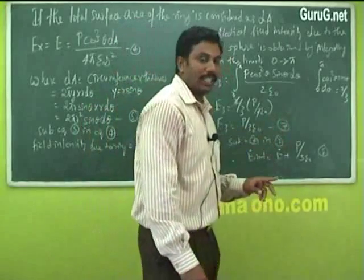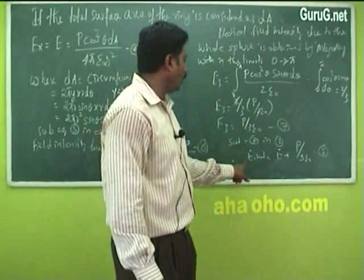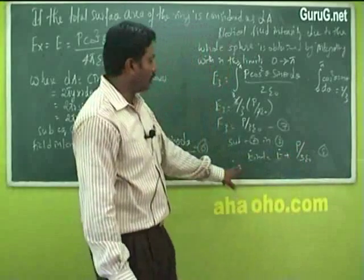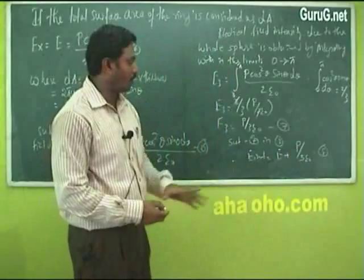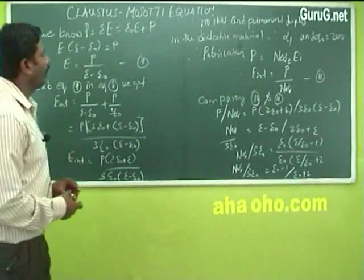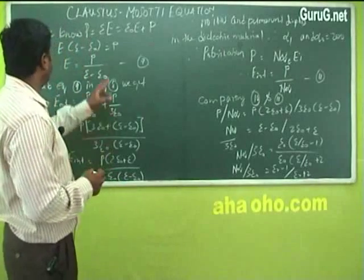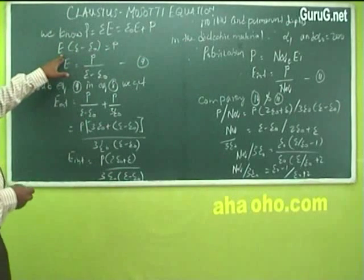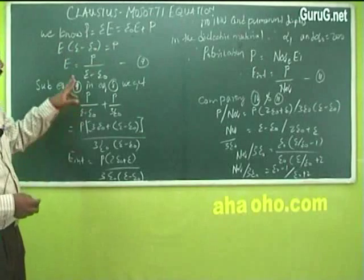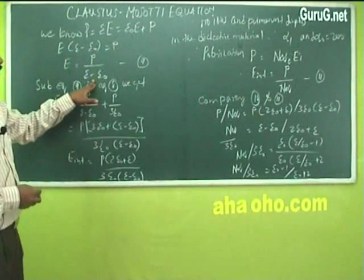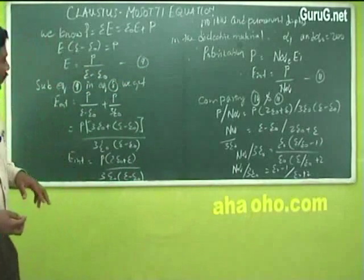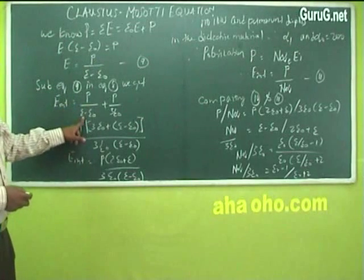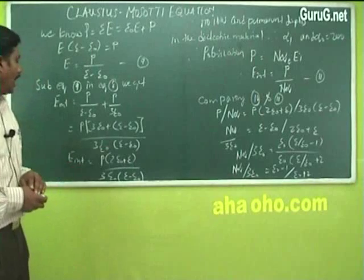Substituting the value of E3 into equation 2, the internal field E_internal = E + P/(3ε₀). This is called the internal field or Lorentz field. For the Clausius-Mossotti relation, we previously derived the displacement relation D = ε₀E + P, which gives E = P/(ε - ε₀). This is equation 9. Substituting equation 9 into the Lorentz field expression: E_internal = P/(ε - ε₀) + P/(3ε₀).